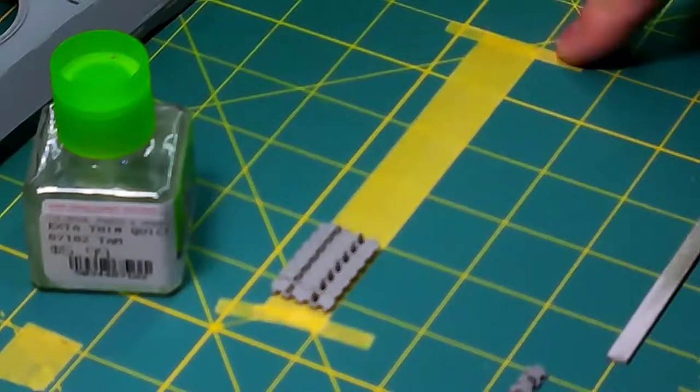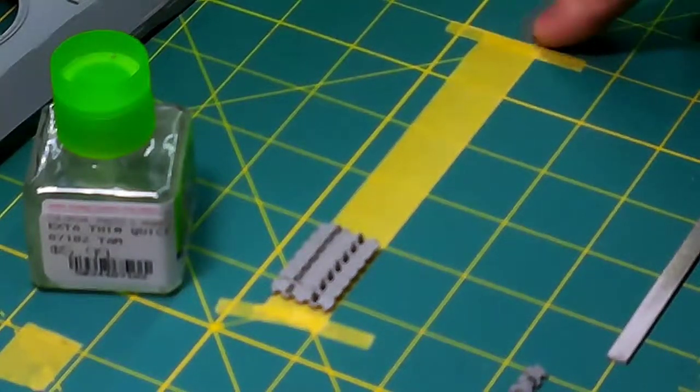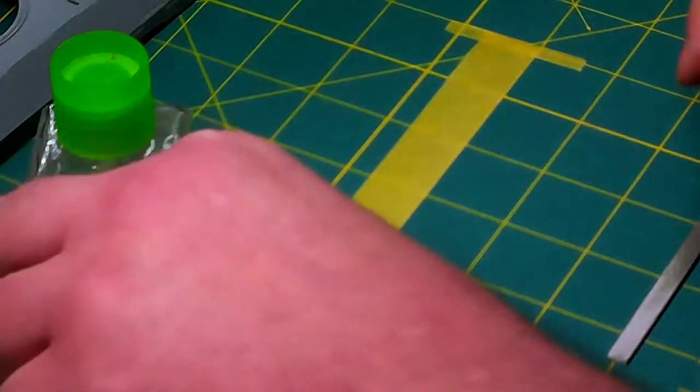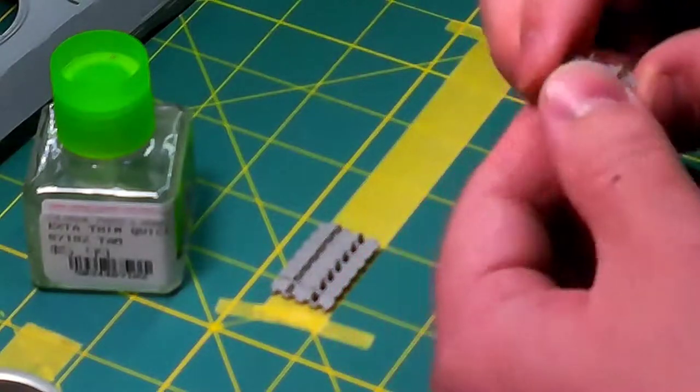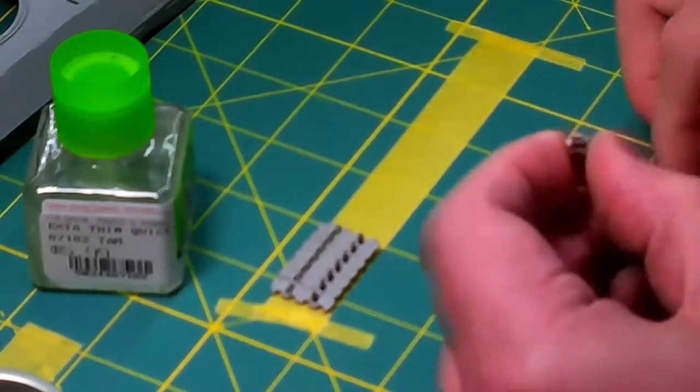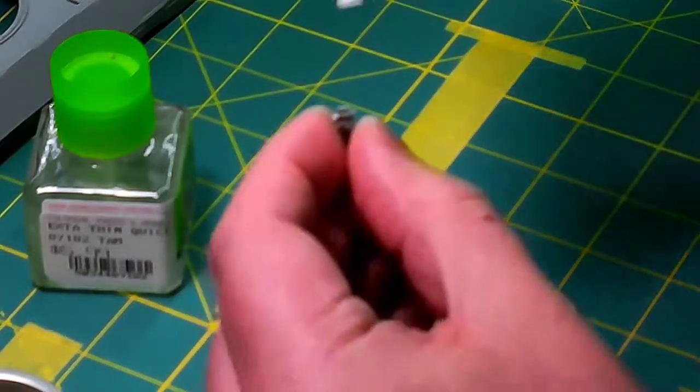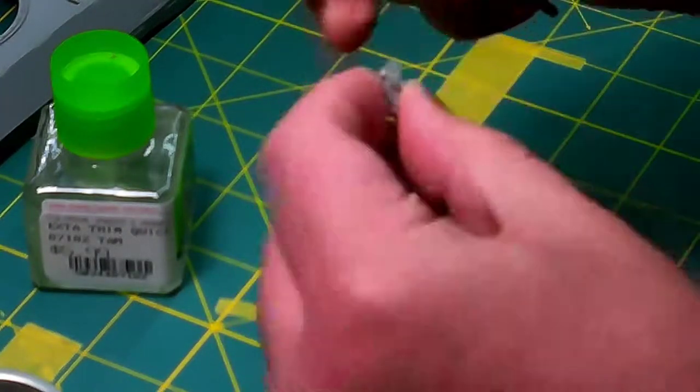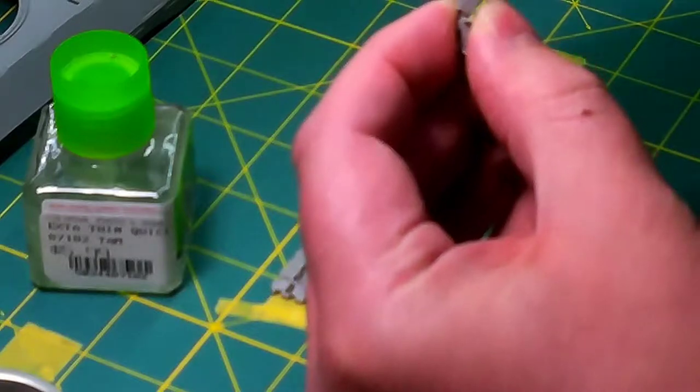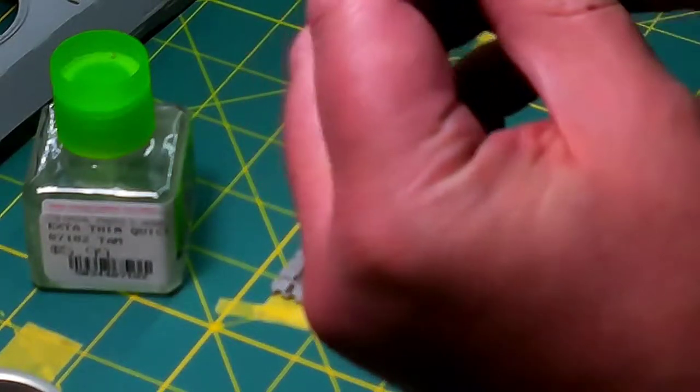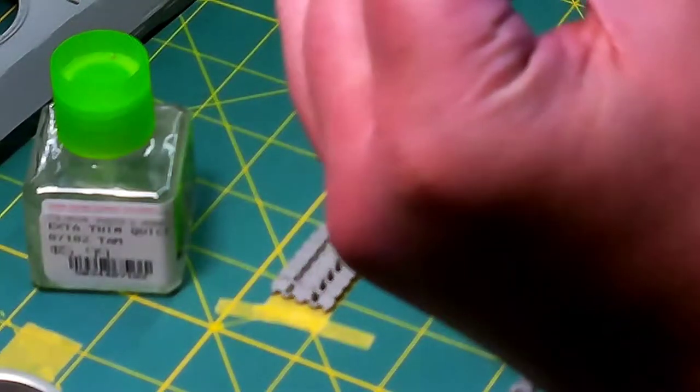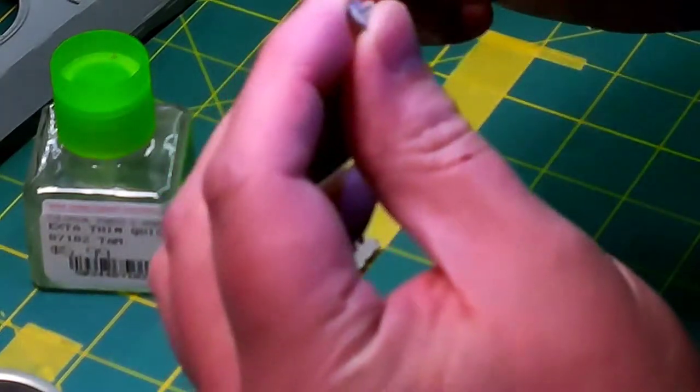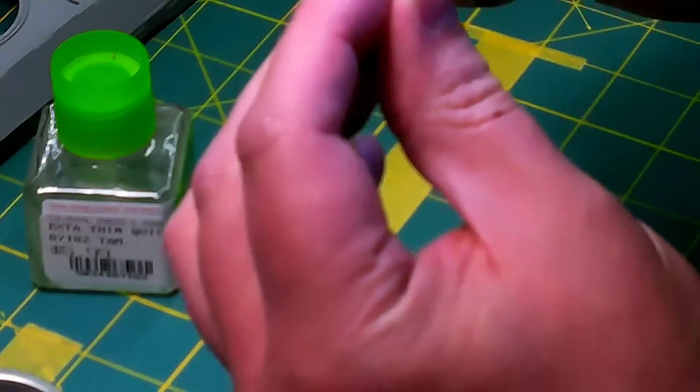I'm taking my tracks that I've already cut off the sprue and filing the edges where they came off, making sure that's nice and smooth. Then I file the little nibs from where we cut the plastic off the guide horns, filing very gently so the guide horns don't break off.